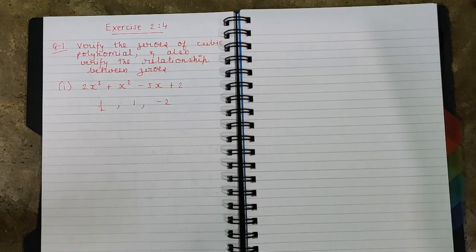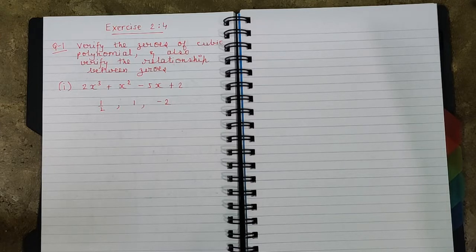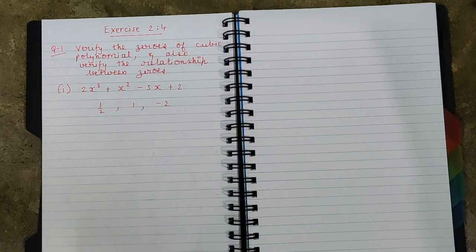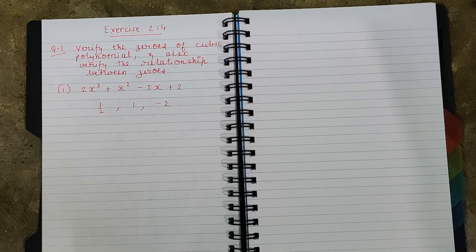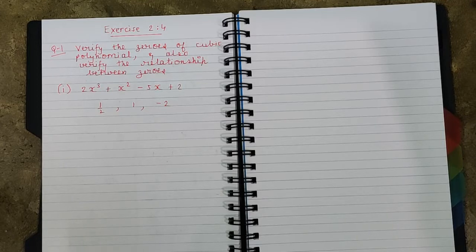Welcome back students. In today's video we will be solving optional exercise 2.4 from the chapter polynomials, and by this we will complete this chapter so that next video onwards we will start a new chapter. All concepts of this chapter have already been discussed. Exercise 2.4 is optional because it contains certain typical sums with a higher difficulty level compared to the other exercises. Still, we will complete this so that our explanation of this chapter is concrete, and all of you can also practice this exercise as homework, which I will discuss at the end of the video.